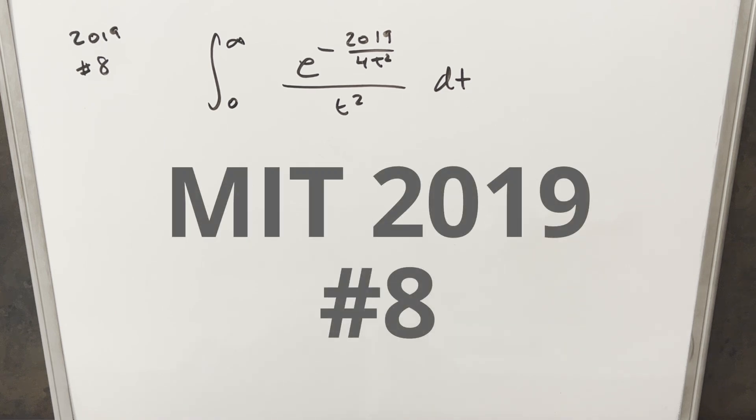Okay, we have here today another integral from the MIT integration, which will be 2019, problem 8. We have the integral from 0 to infinity of e to the minus 2019 over 4t squared over t squared dt.